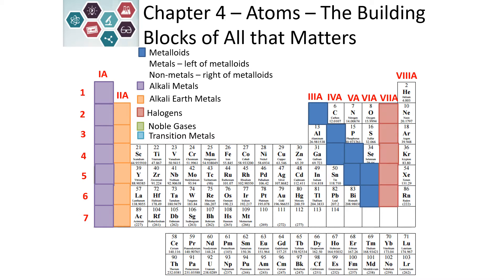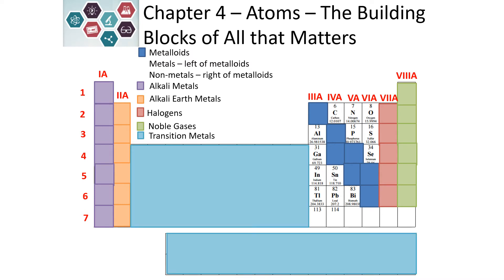We have halogens on the right-hand side and noble gases. Noble gases are very unreactive — they don't like to form compounds with other elements, and everything on the periodic table wants to be like noble gases. The transition metals are in the shorter columns in the middle of the periodic table, as well as the two rows that sit underneath it.